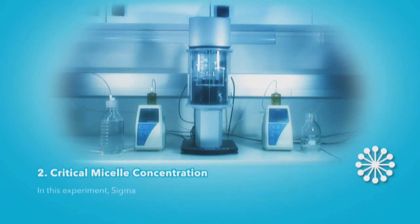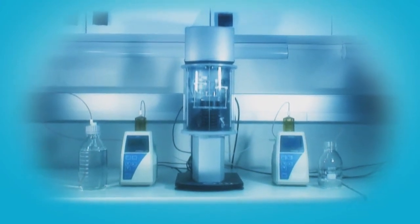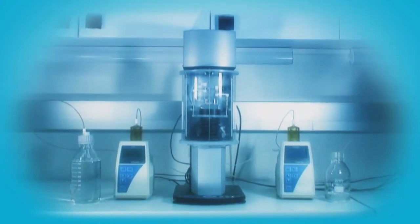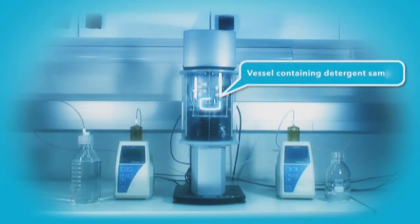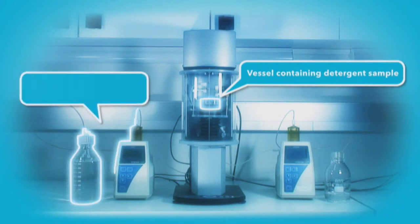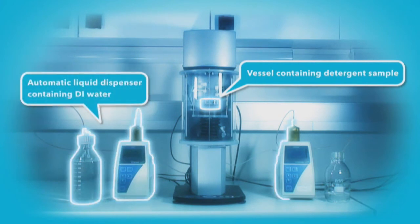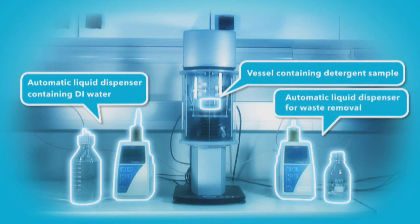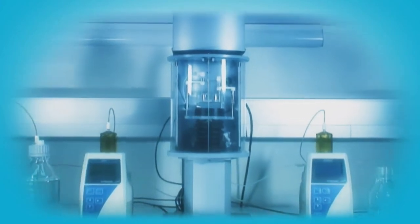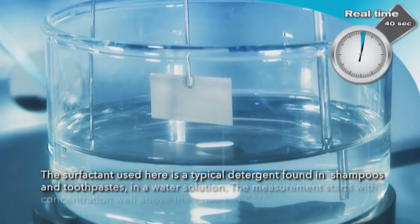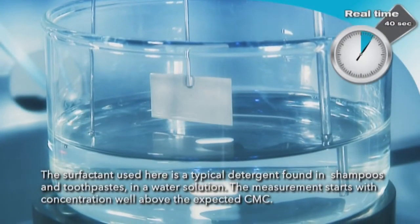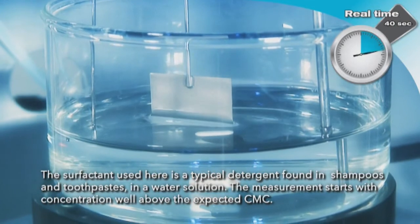In this experiment, sigma will be used to automatically determine the CMC of a detergent solution. A concentrated surfactant solution is on the sample stage and two dispensers are connected to sigma. One dispenser is used to add diluting water, and the other to remove excess liquid. The surfactant used here is a typical detergent found in shampoos and toothpastes in a water solution.